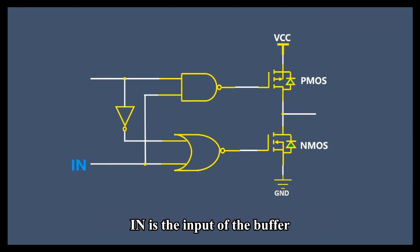IN is the input of the buffer, OUT is the output of the buffer, and E is the enable signal of the buffer.